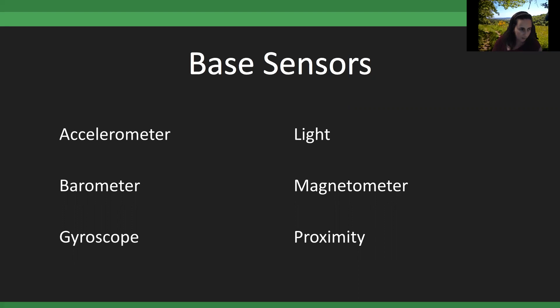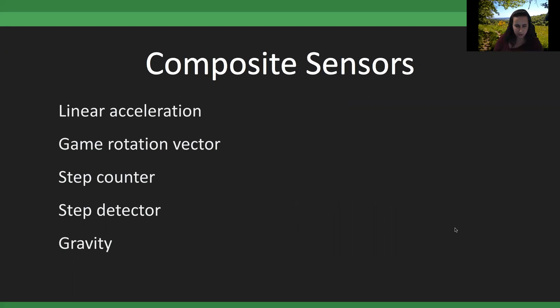The accelerometer measures motion and changes in motion — it measures g-force directly, and you can also get linear acceleration. The barometer is an atmospheric pressure sensor measuring air pressure surrounding the device. The gyroscope measures circular motion. There's the light sensor — actually multiple types. There's the magnetometer. And most devices also have a proximity sensor, which is another type of light sensor. Then there are composite sensors that combine multiple sensor inputs.